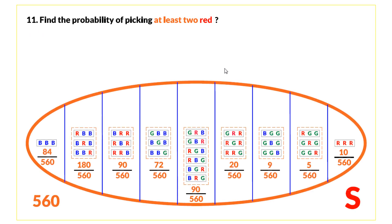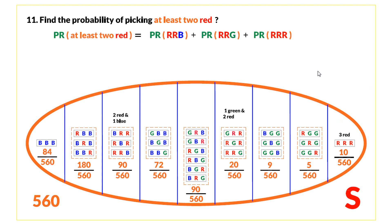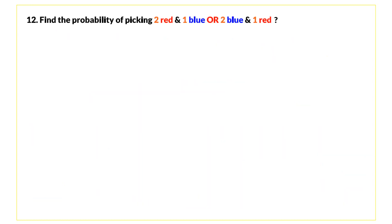Question eleven: find the probability of picking at least two reds. We may pick two reds — found in the corresponding events — or three reds. The probability of this event equals 0.21.